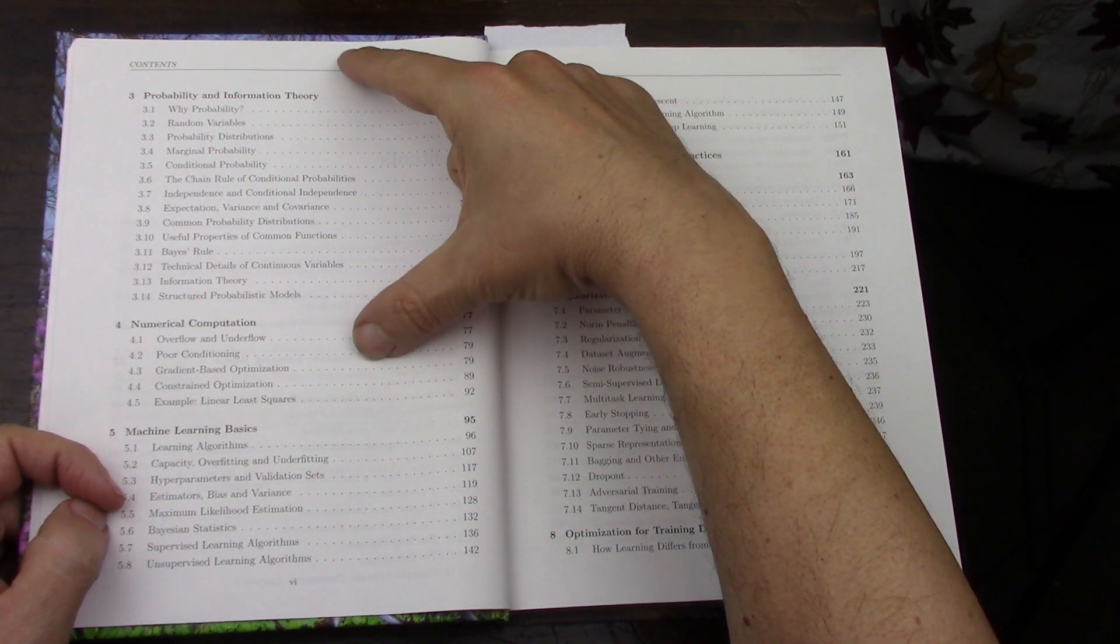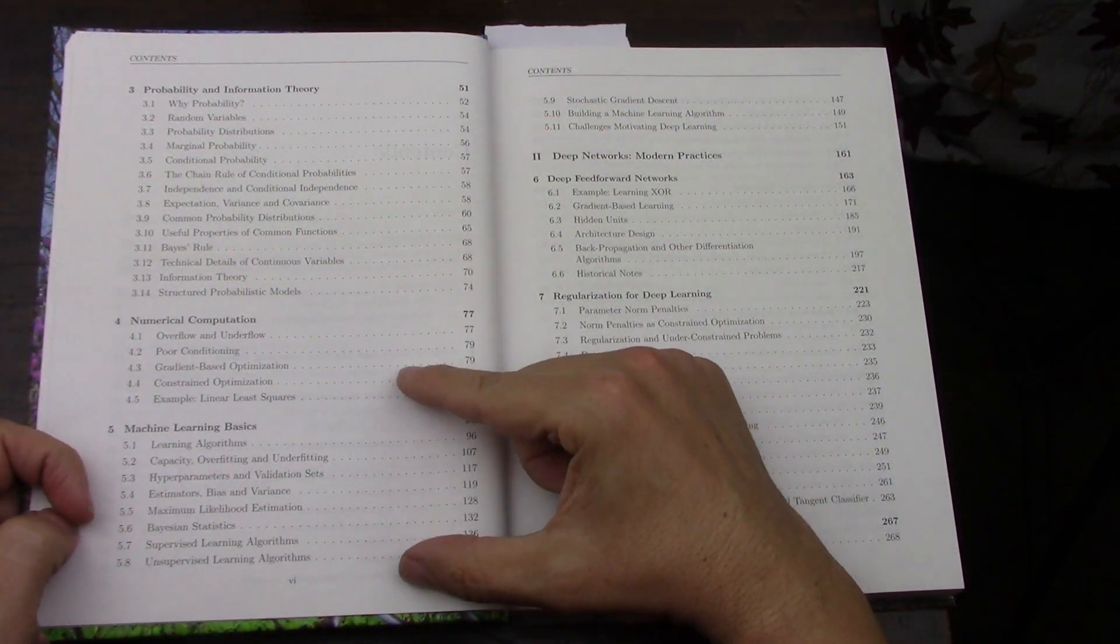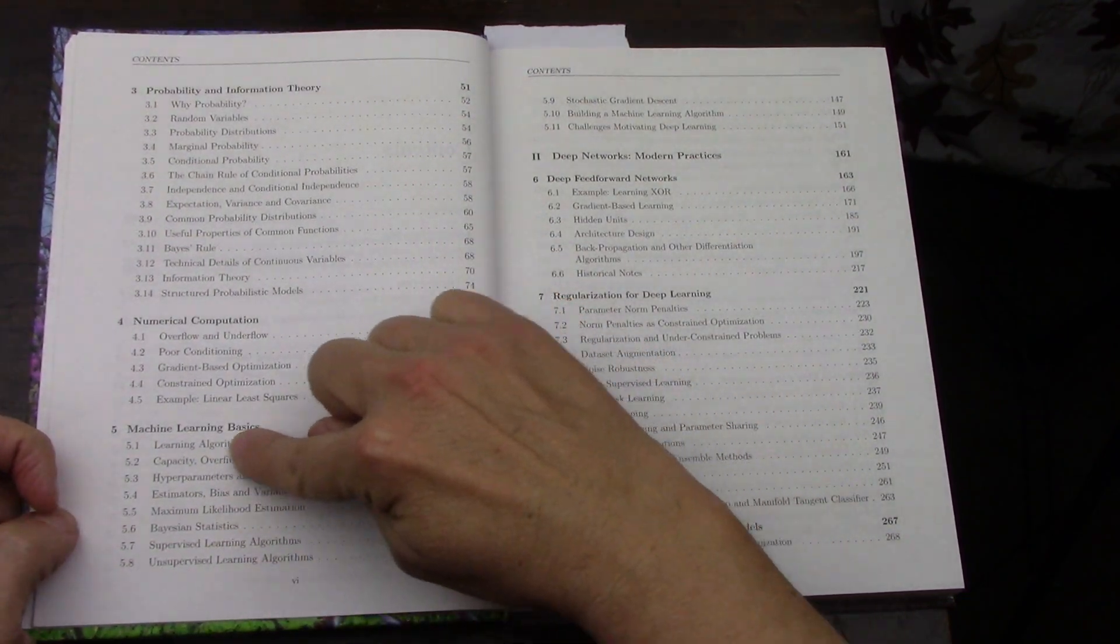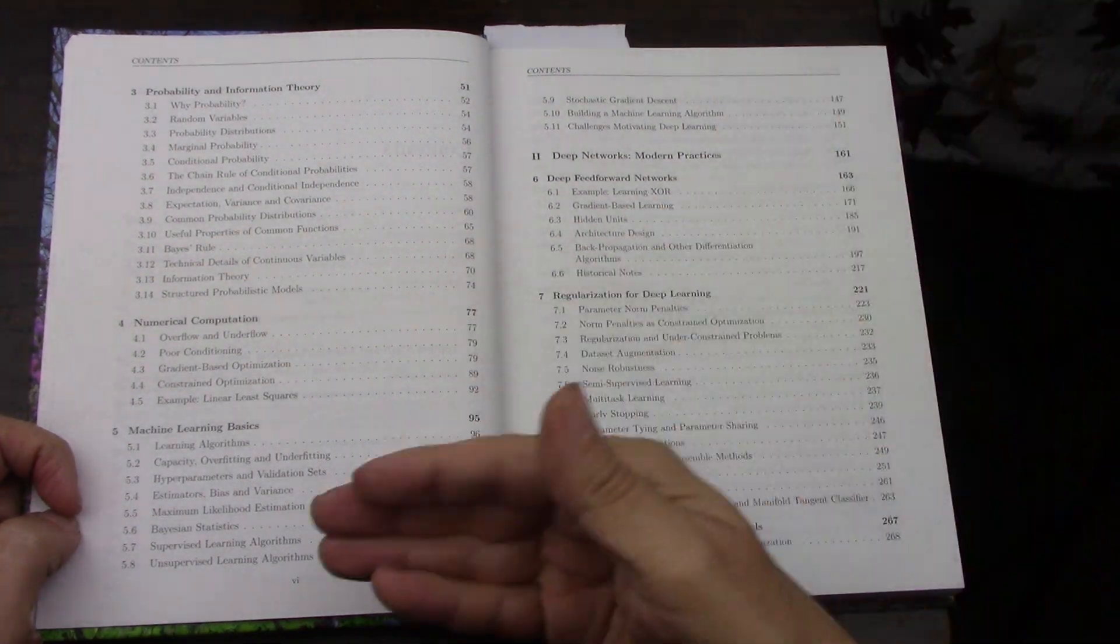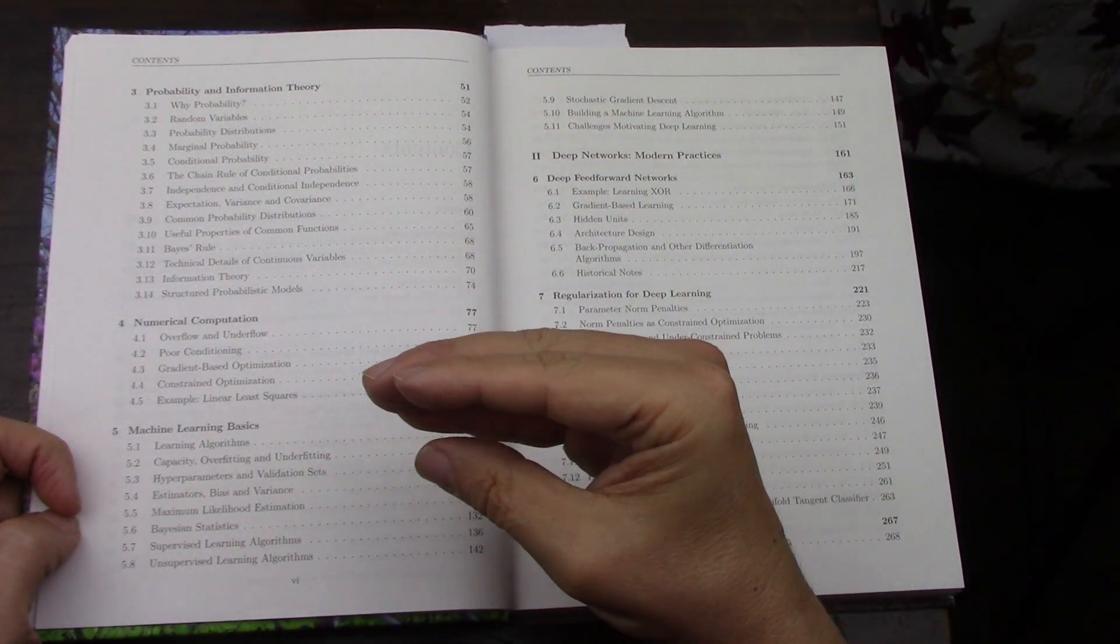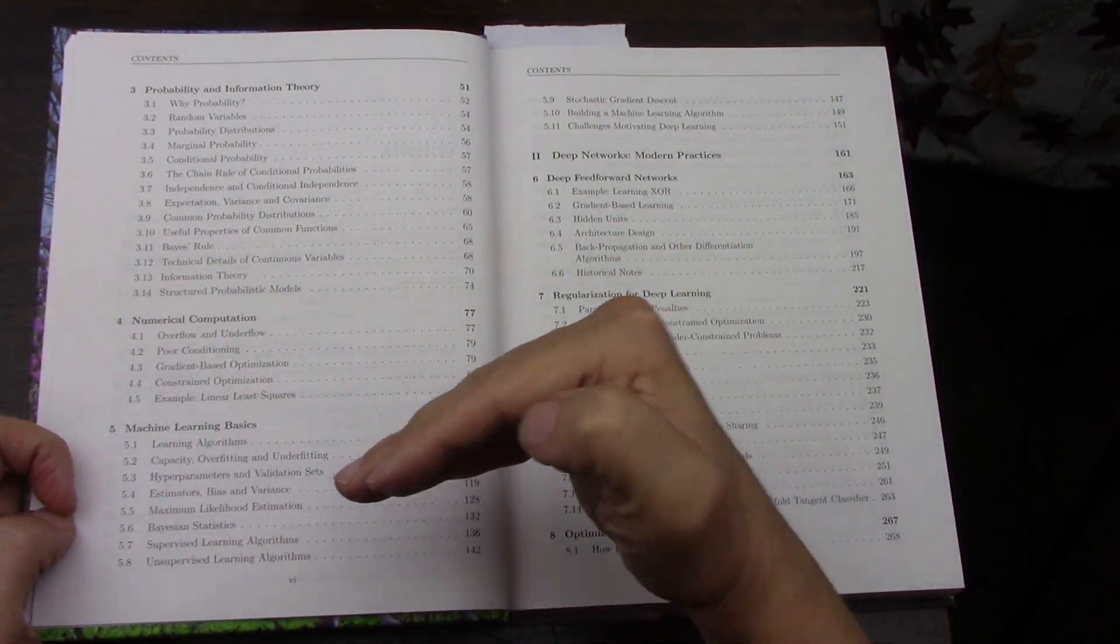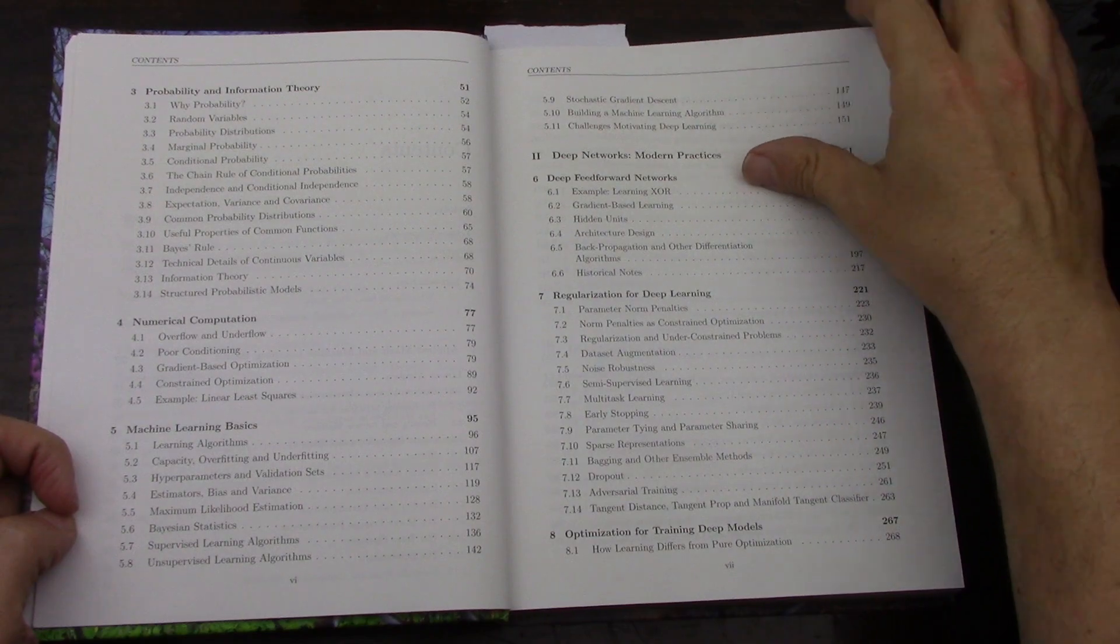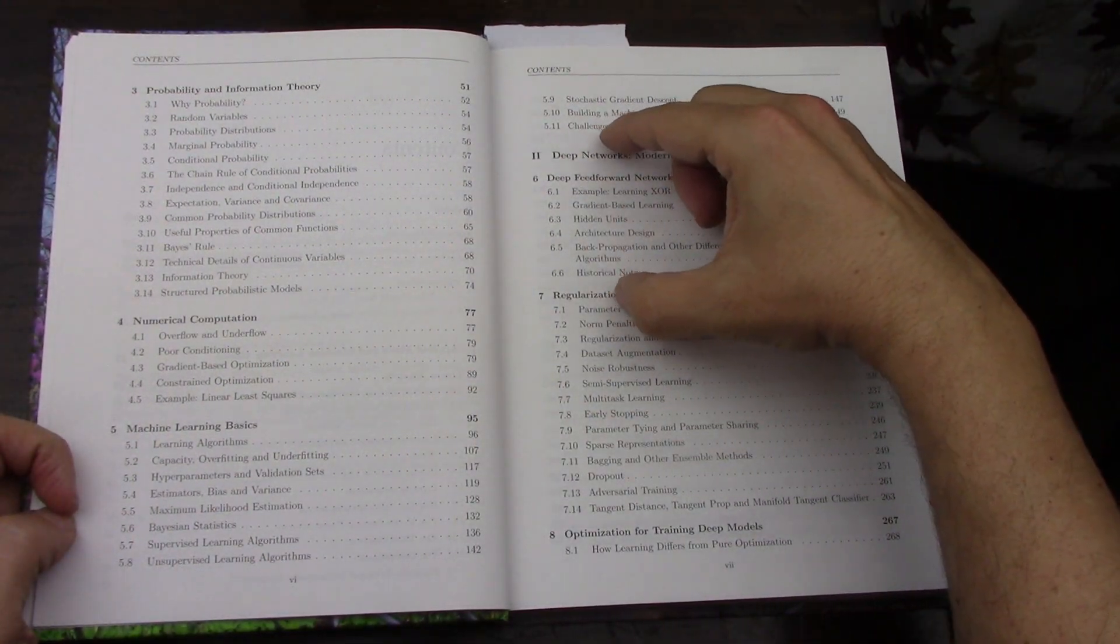Then probability and information theory, numerical computation, the basis of machine learning. This is where the statistics and the math come together—well, statistics is math, I shouldn't say it that way—but the math that is not statistics and the math from statistics come together. Overfitting, all that good stuff, then the neural network part.